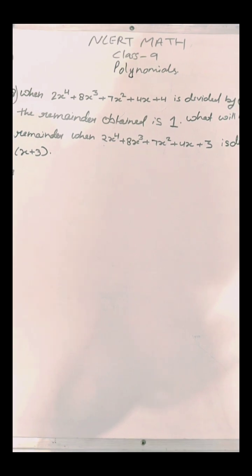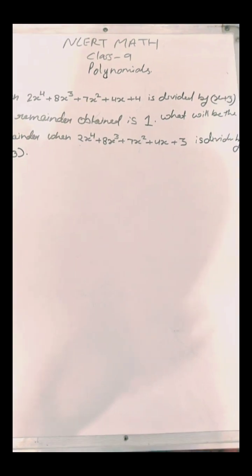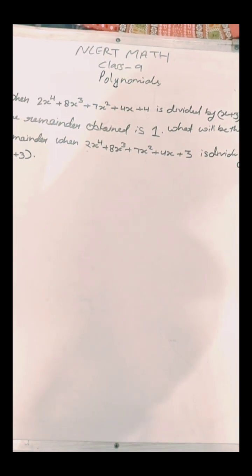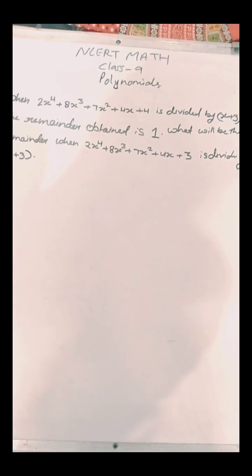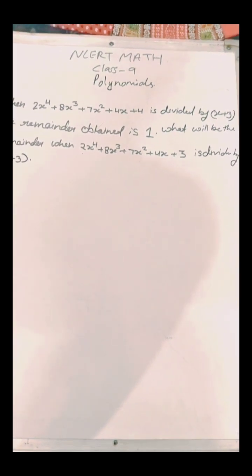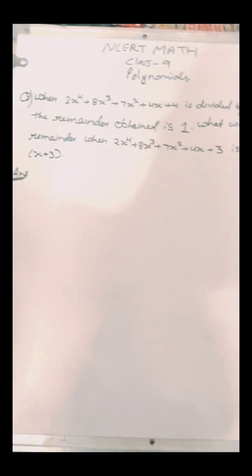then the remainder obtained is equal to 1. What will be the remainder when 2x raised to power 4 plus 8x raised to power 3 plus 7x squared plus 4x plus 3 is divided by x plus 3?